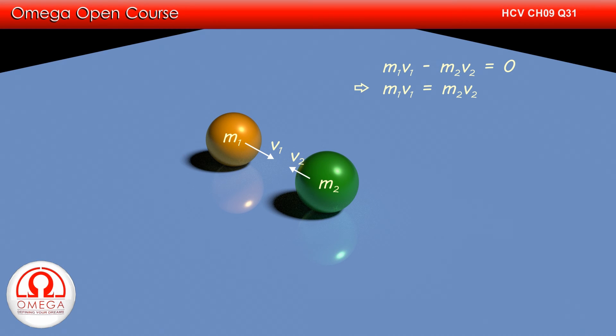This implies m1 v1 is equal to m2 v2. Simplifying, we get v2 is equal to m1 v1 divided by m2.